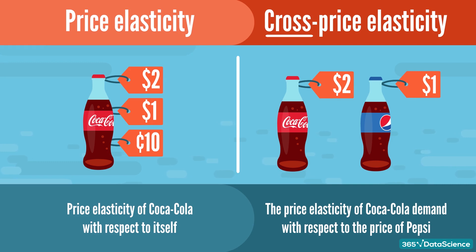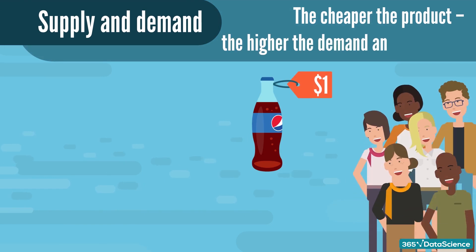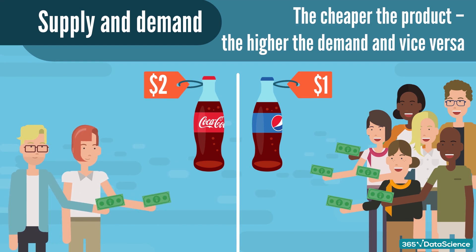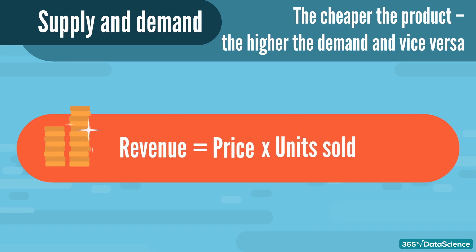Price elasticity stems from the basic economic law of supply and demand. The cheaper the product, the higher the demand. The more expensive the product, the lower the demand. Simple as that. It is extremely important for business, though, because there is a sweet spot which maximizes revenue. Since revenue is equal to the price times units sold, we can use this price elasticity concept to find the point at which price times units sold is optimal.